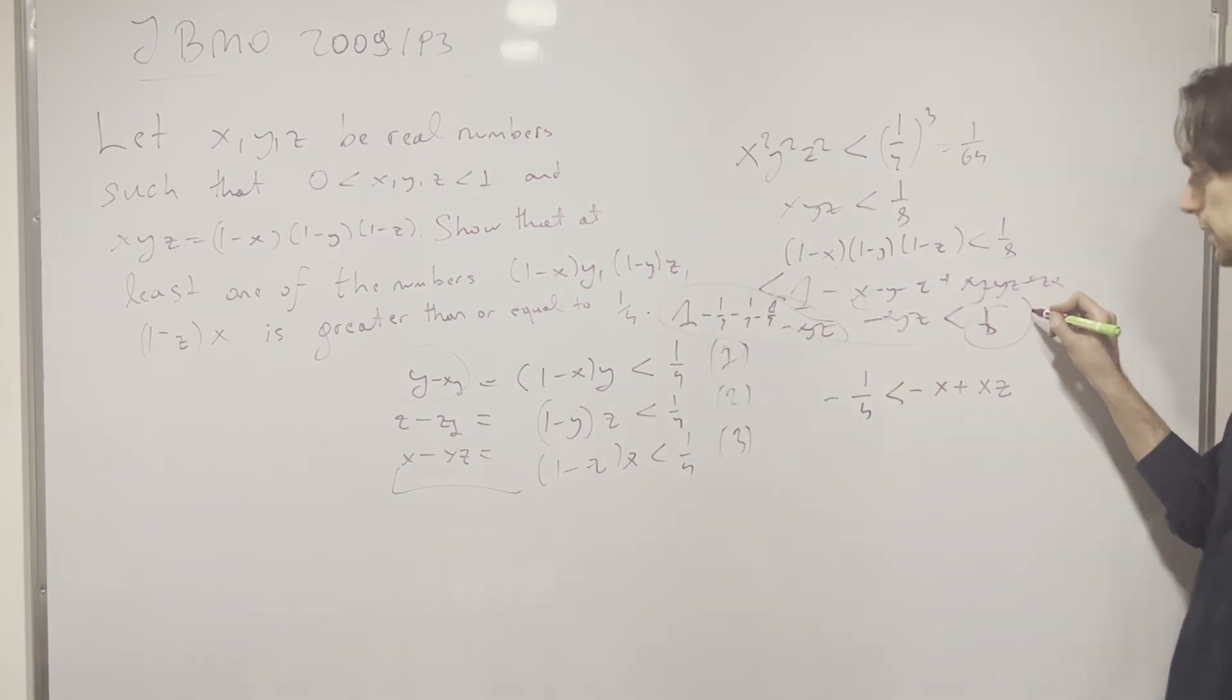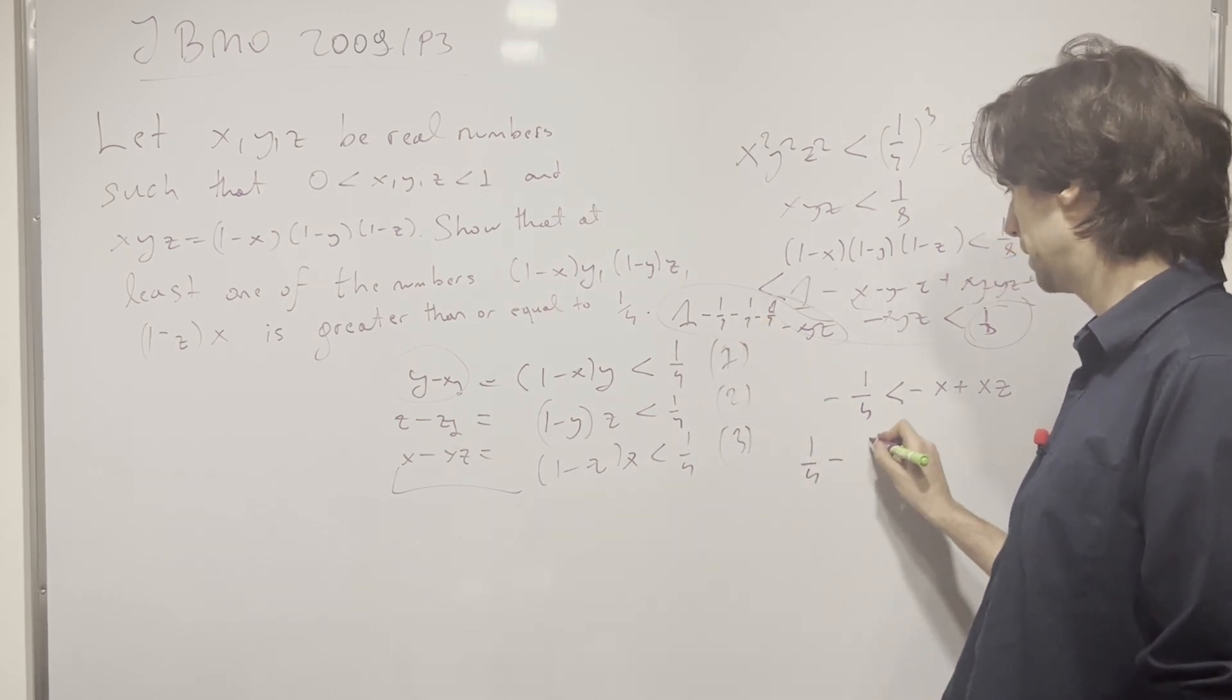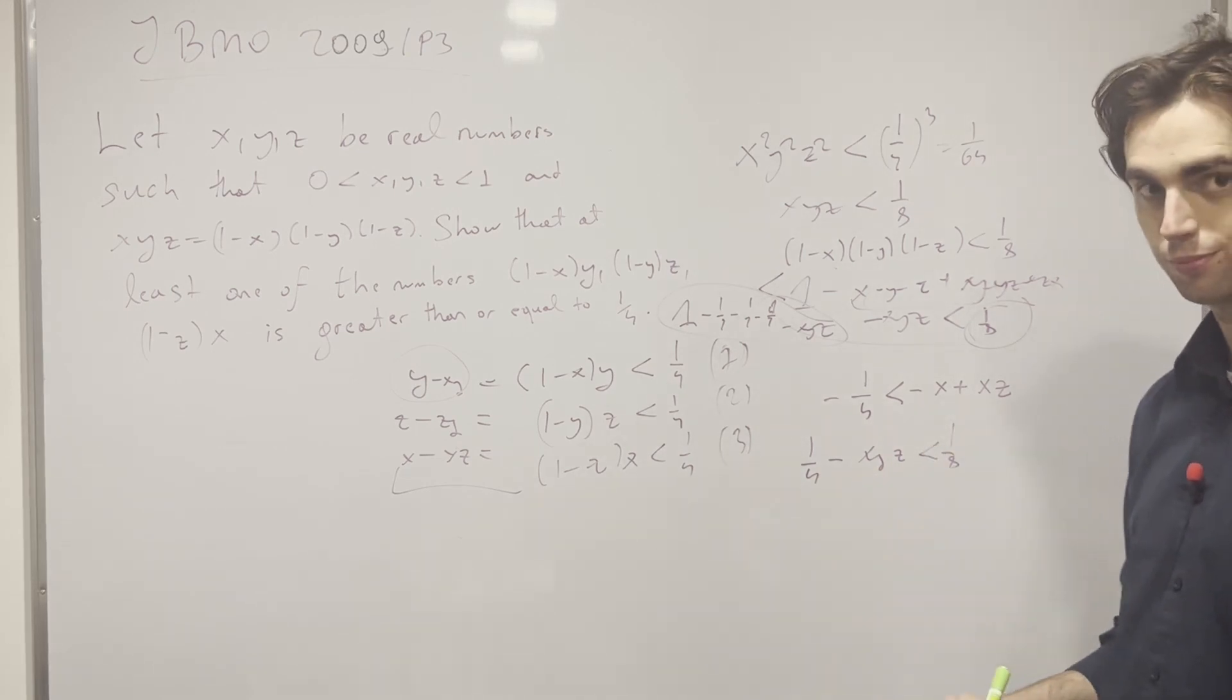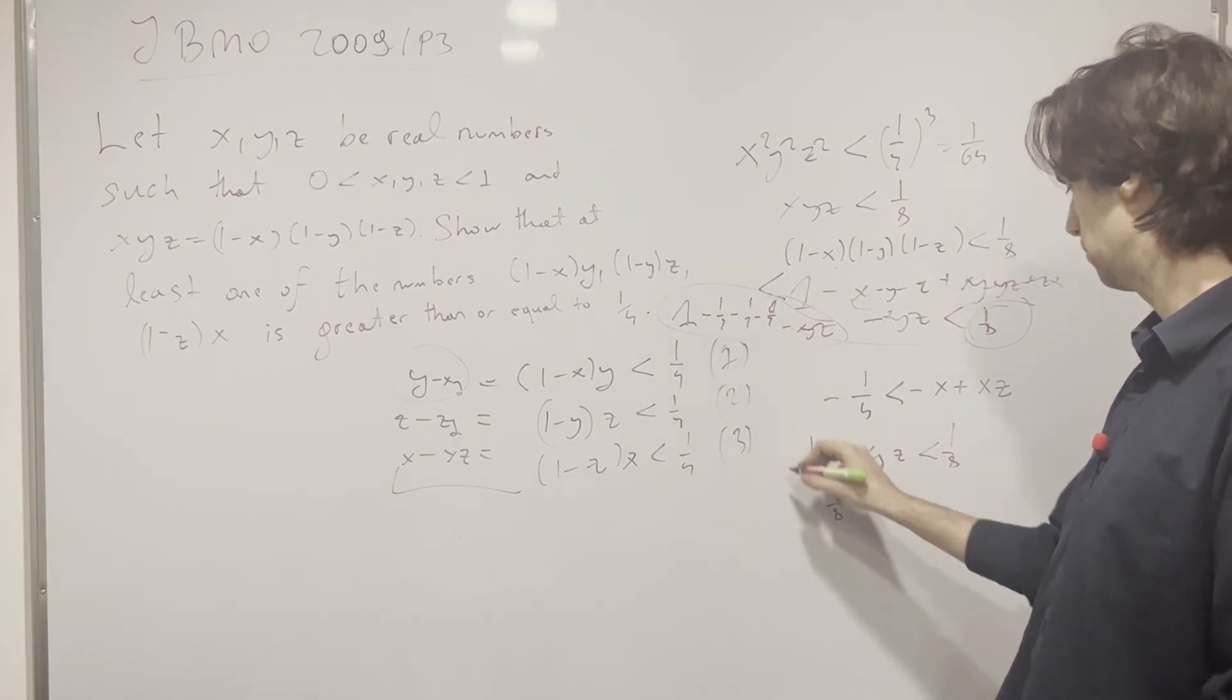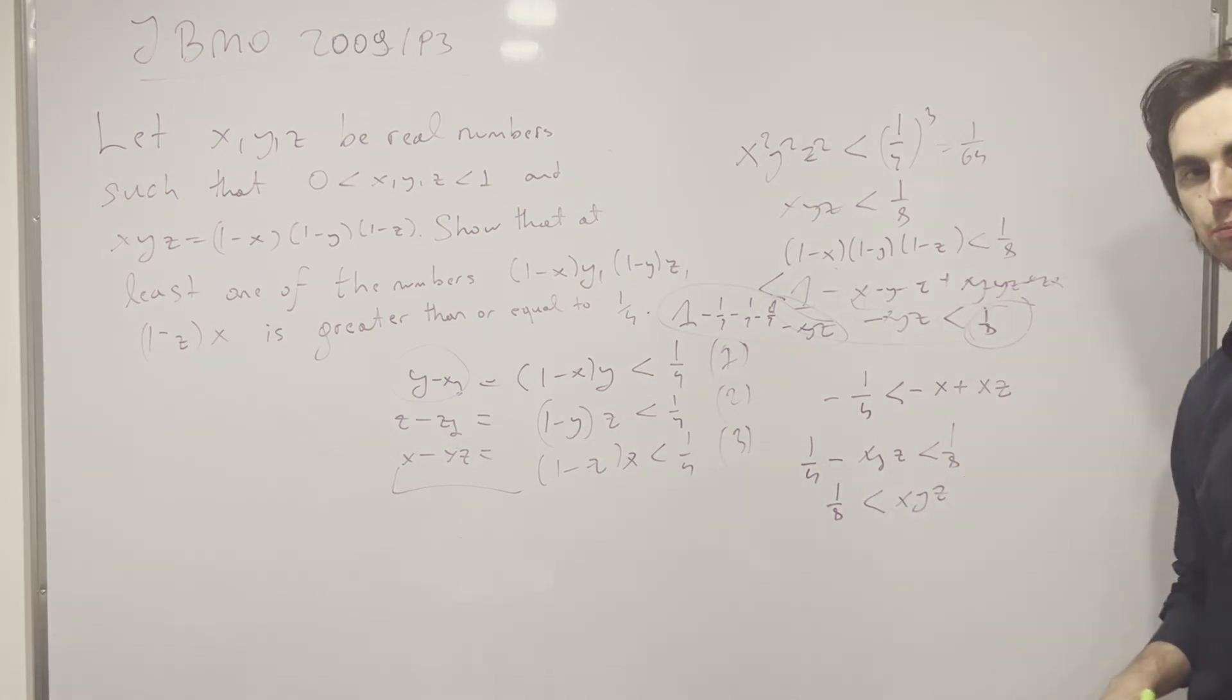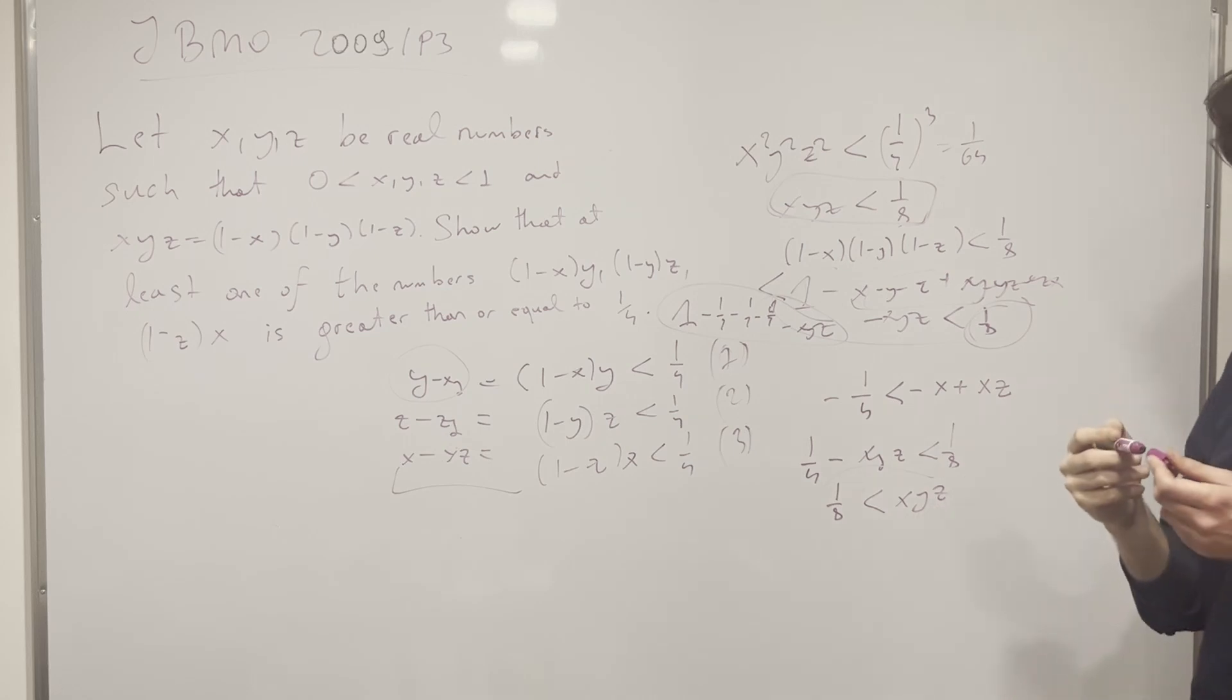This thing right here is less than 1 over 8. So in other words, I'm getting that this is going to be a fourth minus xyz is less than 1 over 8. Now what does this mean? Well, it means that 1 over 8, which is a fourth minus an 8, is less than x times y times z. But I already have this. Now I have this, and this finishes up our inequality.